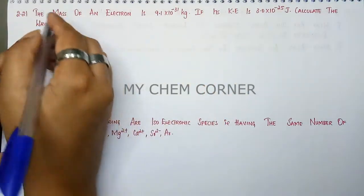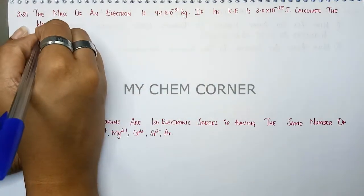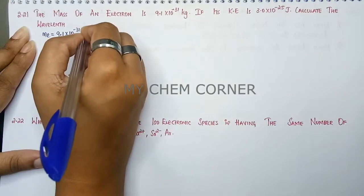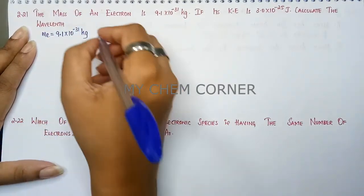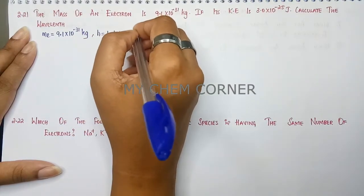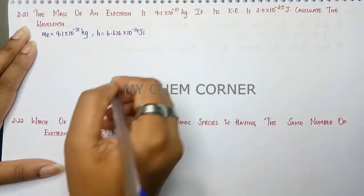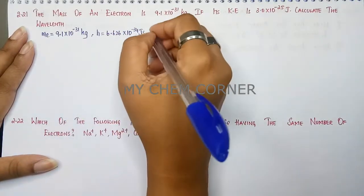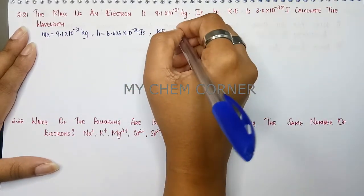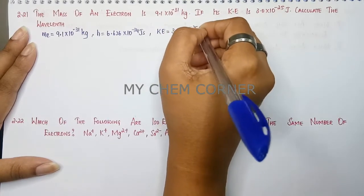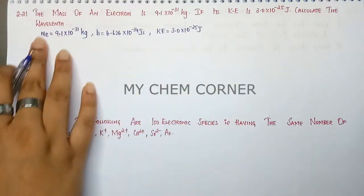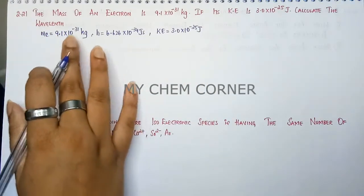Mass of the electron given to us is 9.1 × 10⁻³¹ kg. Planck's constant is 6.626 × 10⁻³⁴ joule-second. The kinetic energy given in the question is 3.0 × 10⁻²⁵ joule. Now we need to calculate the wavelength.